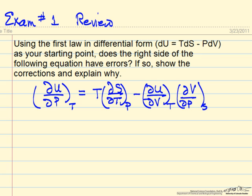In this case, we start with the differential form of the energy balance for a closed system: dU = TdS - PdV. We want to determine if the right side of the equation shown has errors.